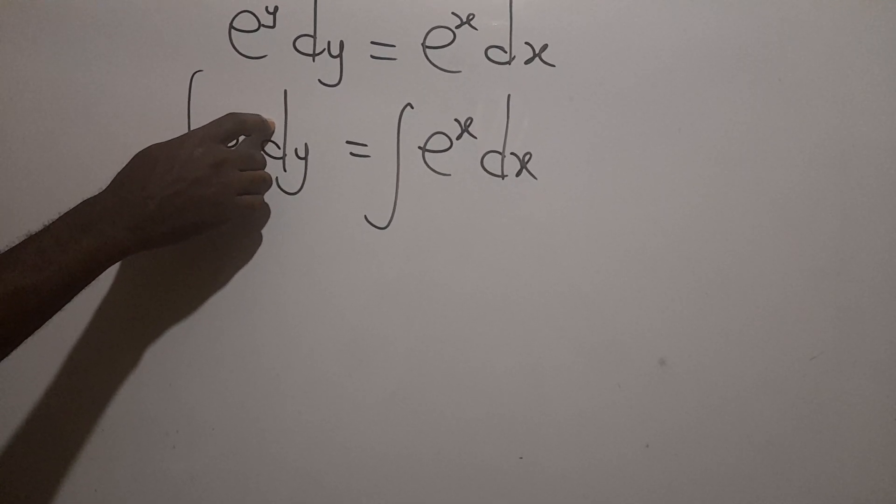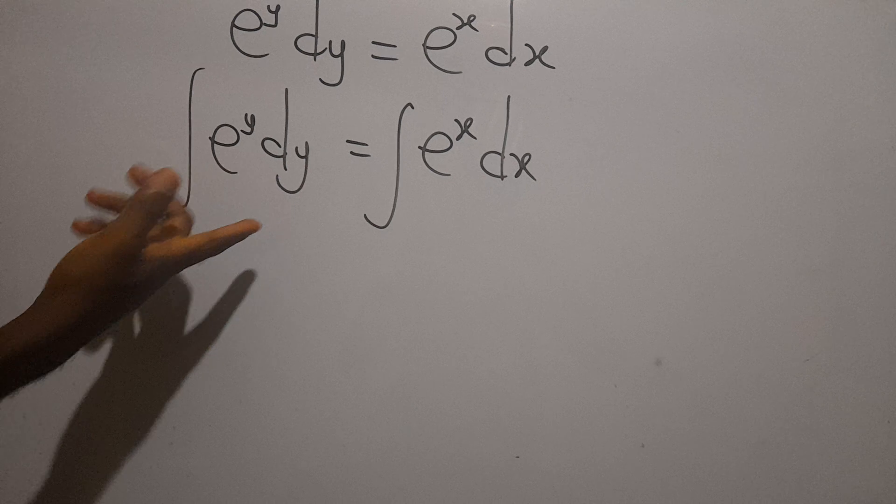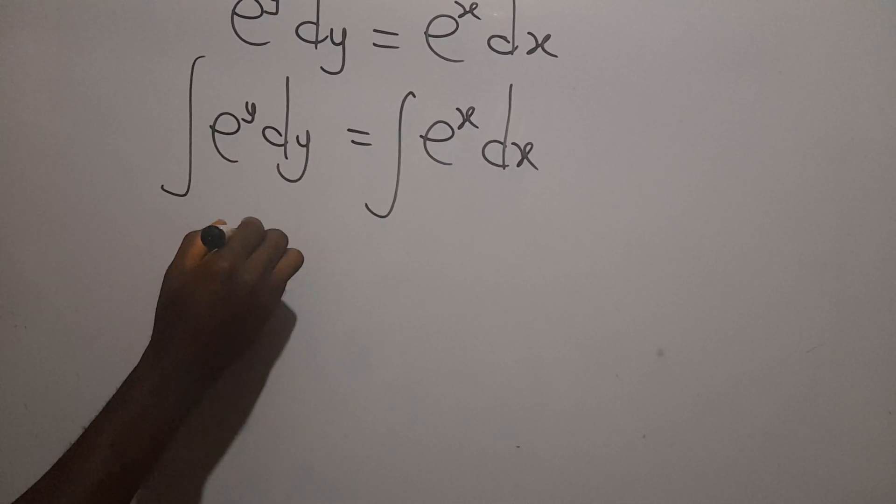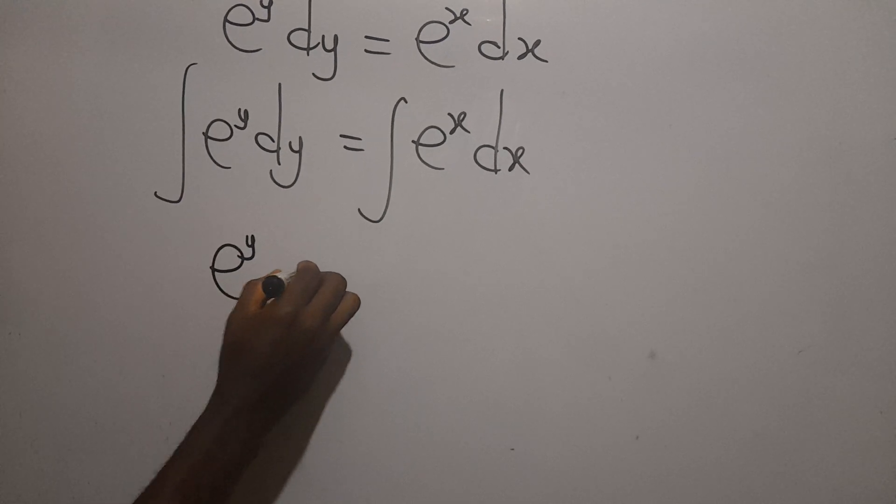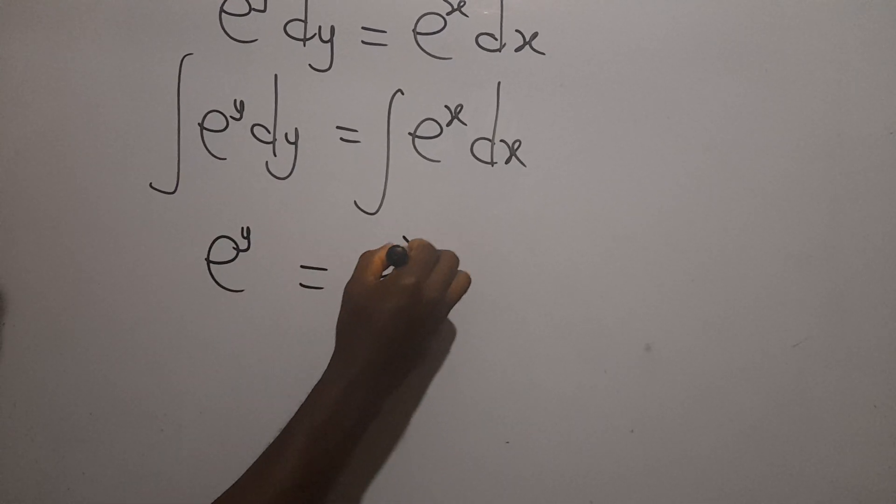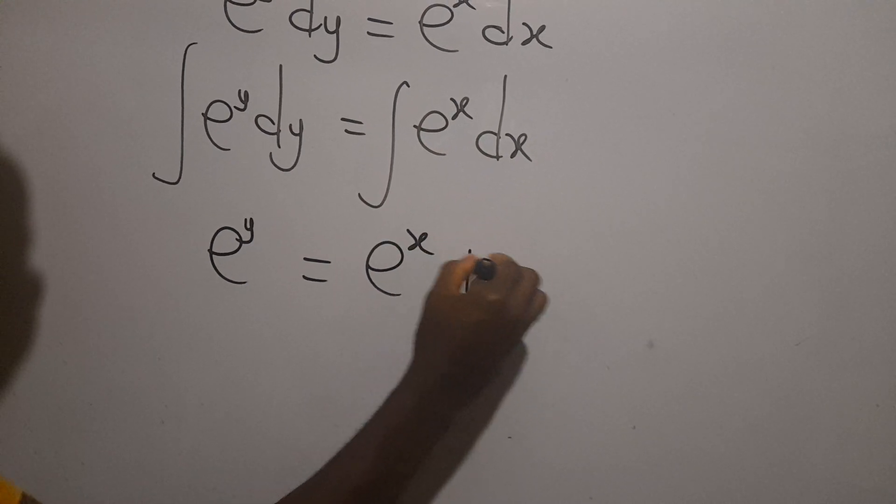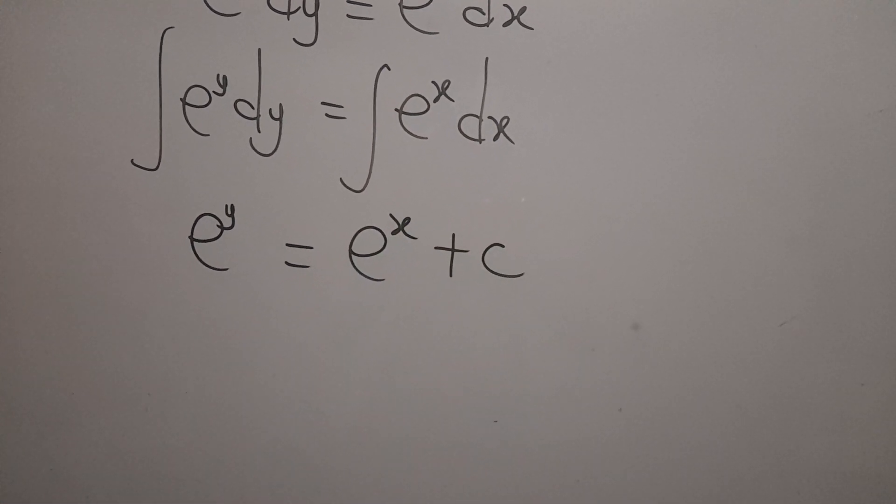So when we differentiate y we get one. When we use it to divide we still get that. So the integral of this will be e exponent y equal to e exponent x. The integral of this will also be e exponent x then plus our constant of integration.